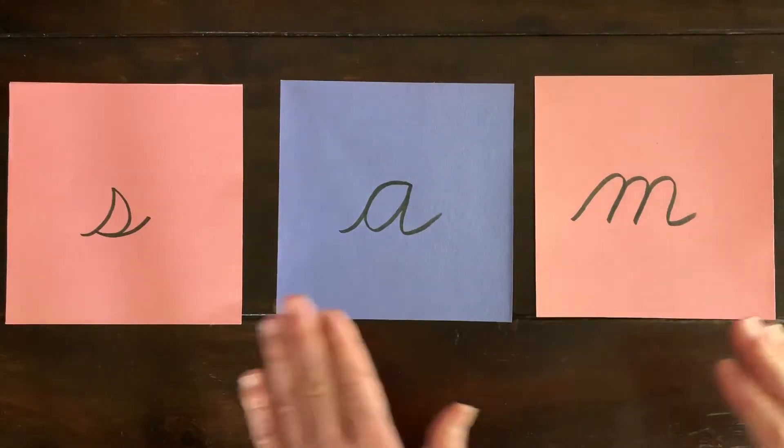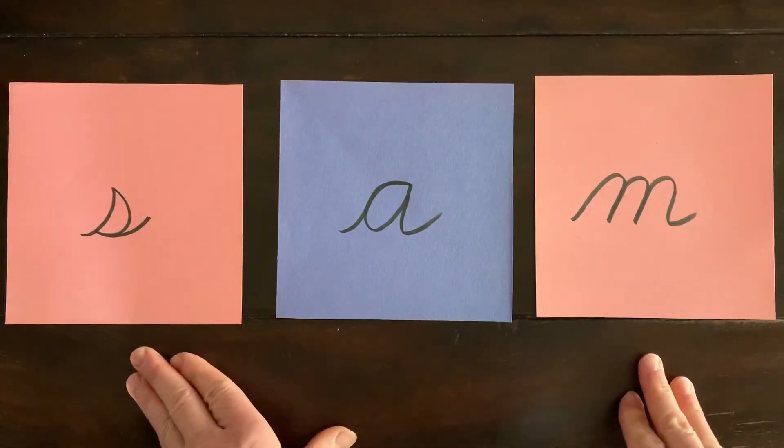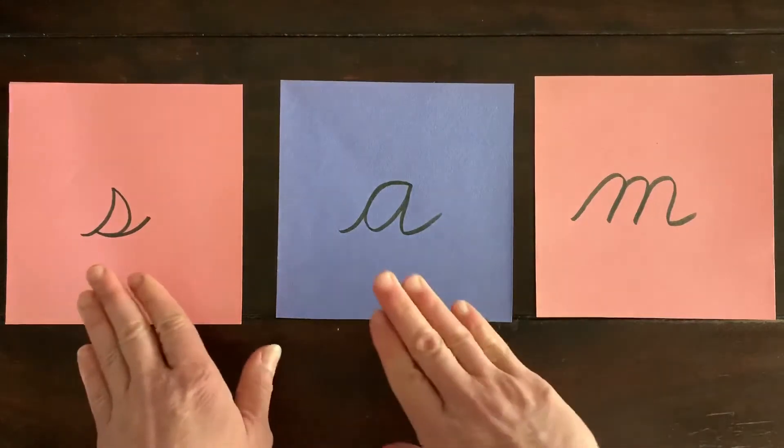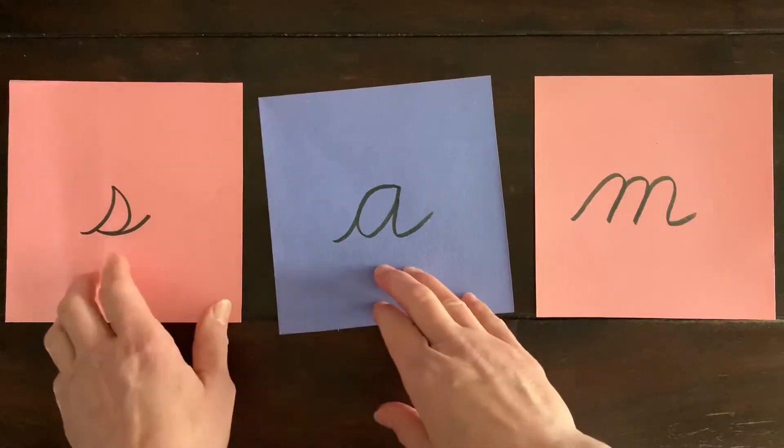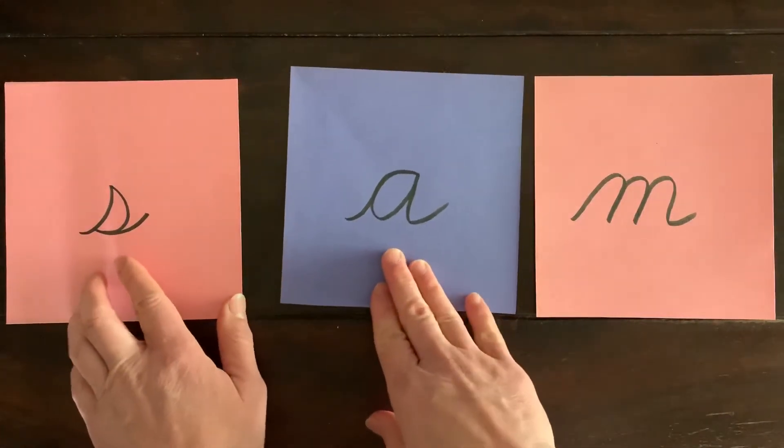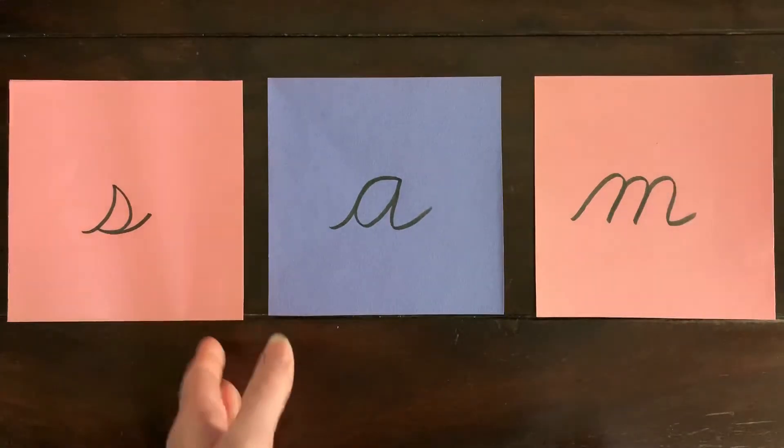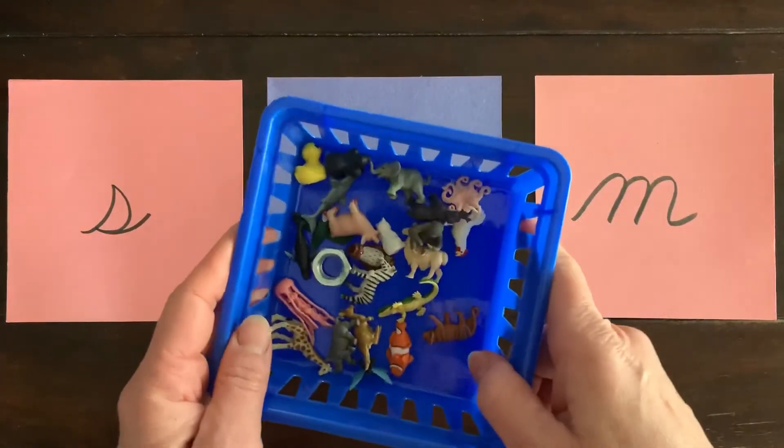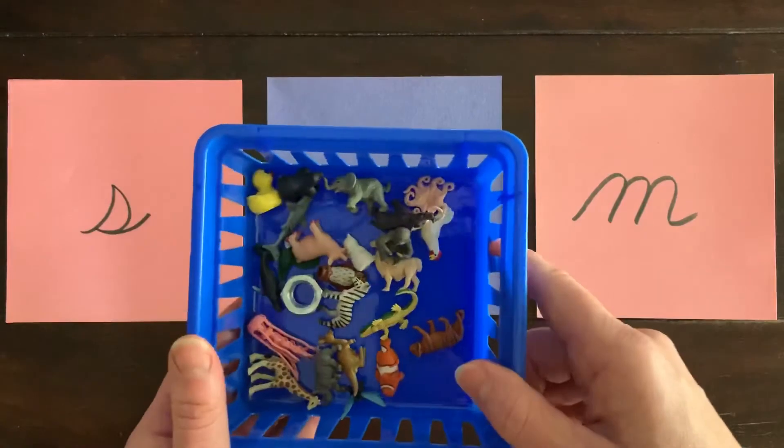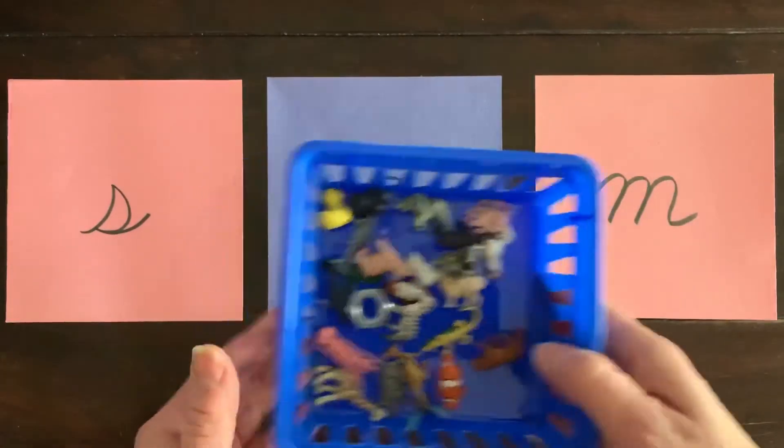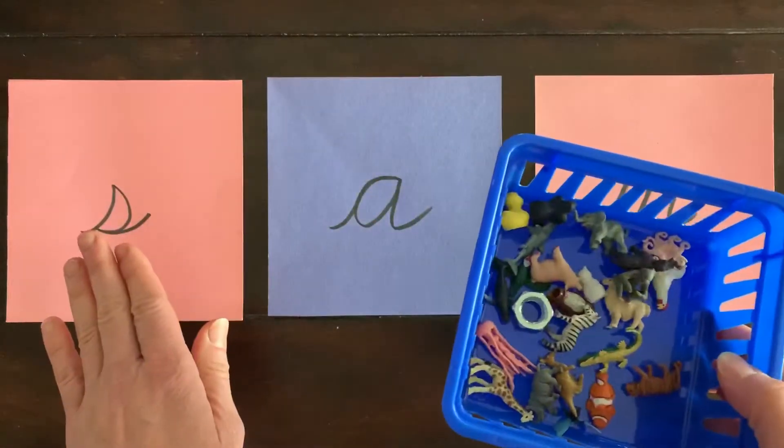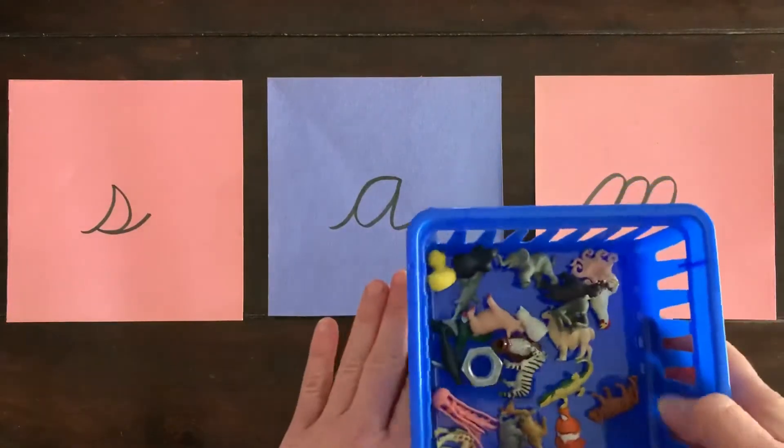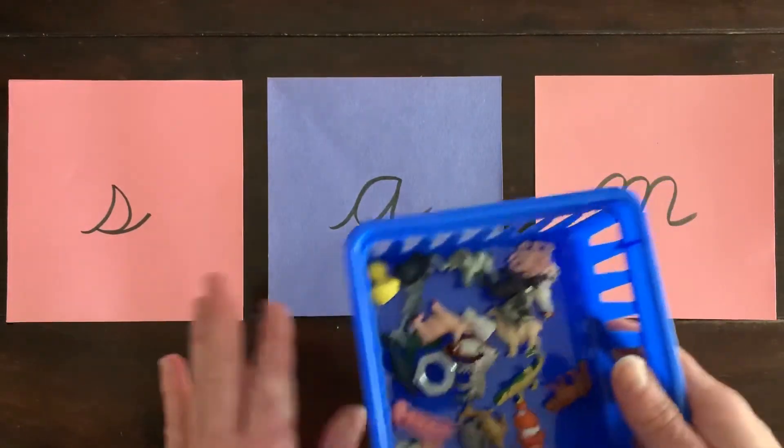Now for this sound game, the children will have already needed to be introduced to the sandpaper letters so they're familiar with the symbol for the sound, and they've also been introduced to the objects through I Spy and other sound games, so neither of these objects or the letters themselves are unfamiliar.